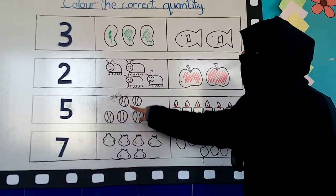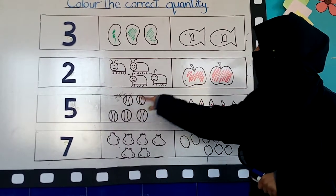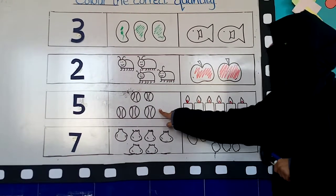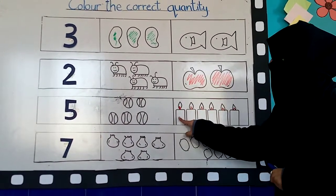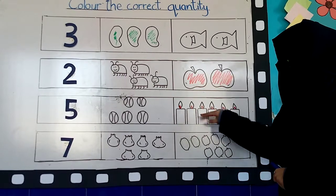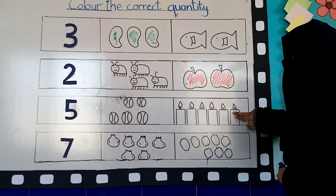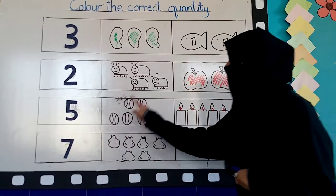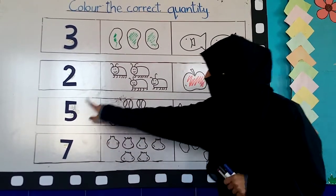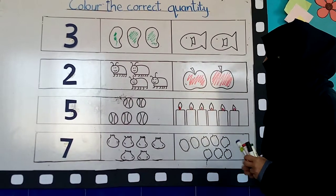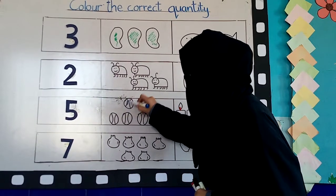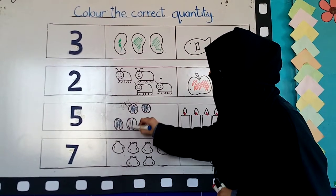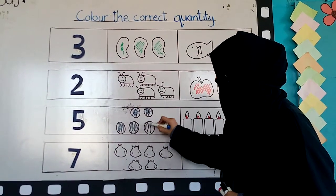Count how many apples are here? One, two, three, four, five. How many apples? Five. Count how many candies are here? One, two, three, four, five, six. How many candies? Six. So we have to color these balls because there are five balls. How many colors are here? Five.